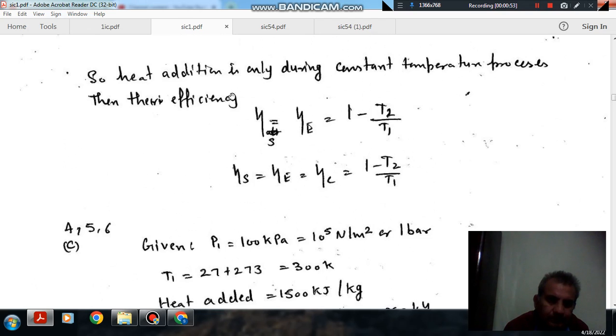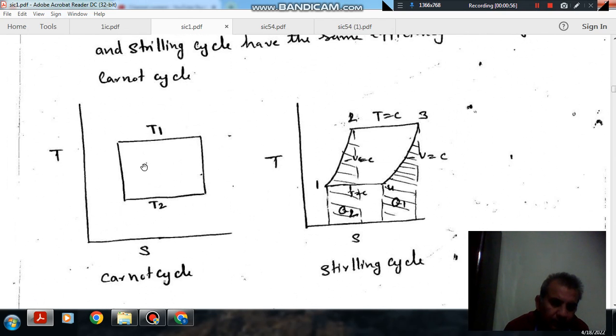So, this is your Carnot cycle and here the temperature, heat is adjusted at constant temperature and heat is rejected at constant temperature and in between there are two adiabatic processes.